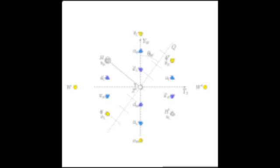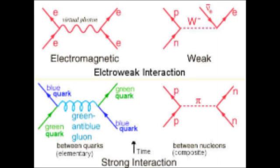In particle physics, the electro-weak interaction is the unified description of two of the four known fundamental interactions of nature: electromagnetism and the weak interaction. Although these two forces appear very different at everyday low energies, the theory models them as two different aspects of the same force.